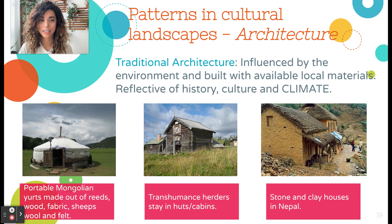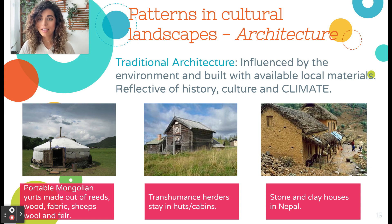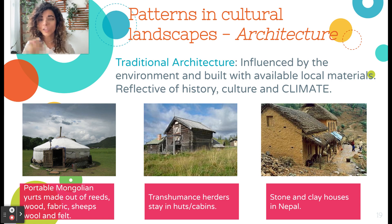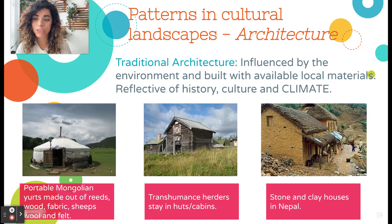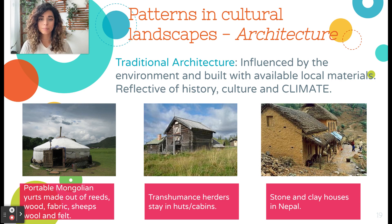Shifting to the architecture of the cultural landscape — traditional architecture is influenced by the environment and built with available local materials. It reflects history, culture, climate, and the physical geography surrounding a culture. Three examples from different parts of the world are shown here, and each one uses elements from its local environment for this traditional type of architecture.